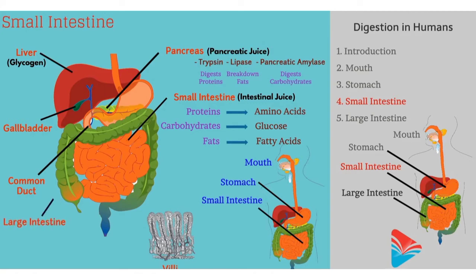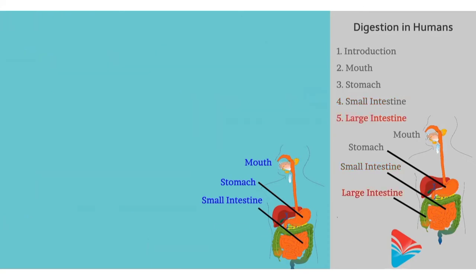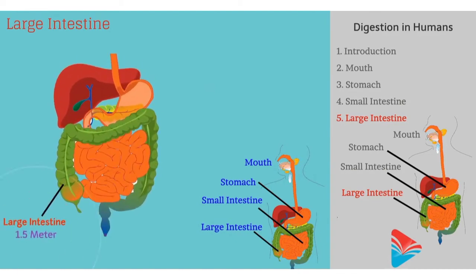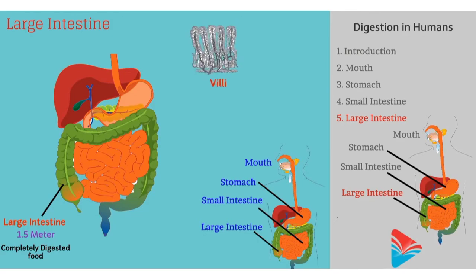The unabsorbed food then enters the large intestine. The large intestine is about 1.5 meters long. The walls of the large intestine have villi which absorb water and salts from the digested food. The waste material comes out through the anus.